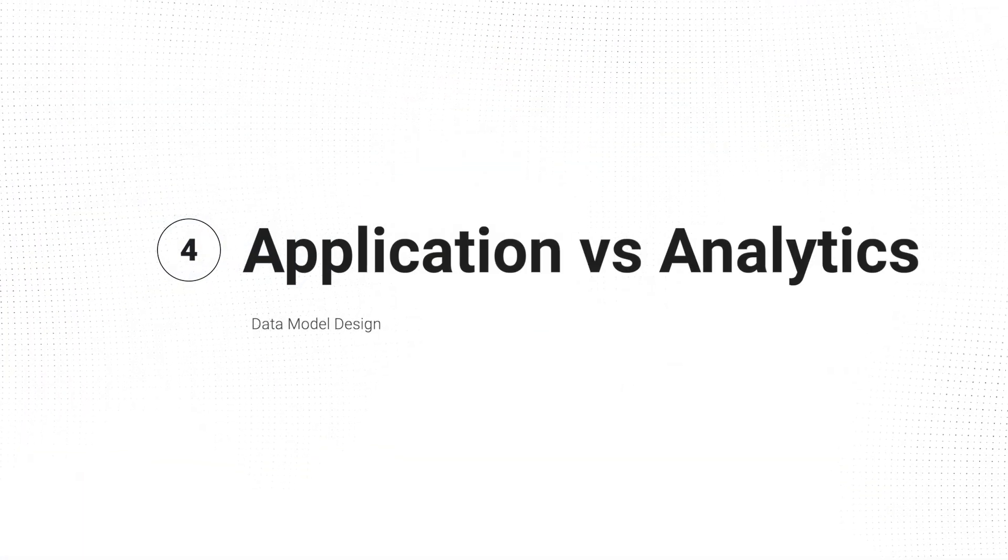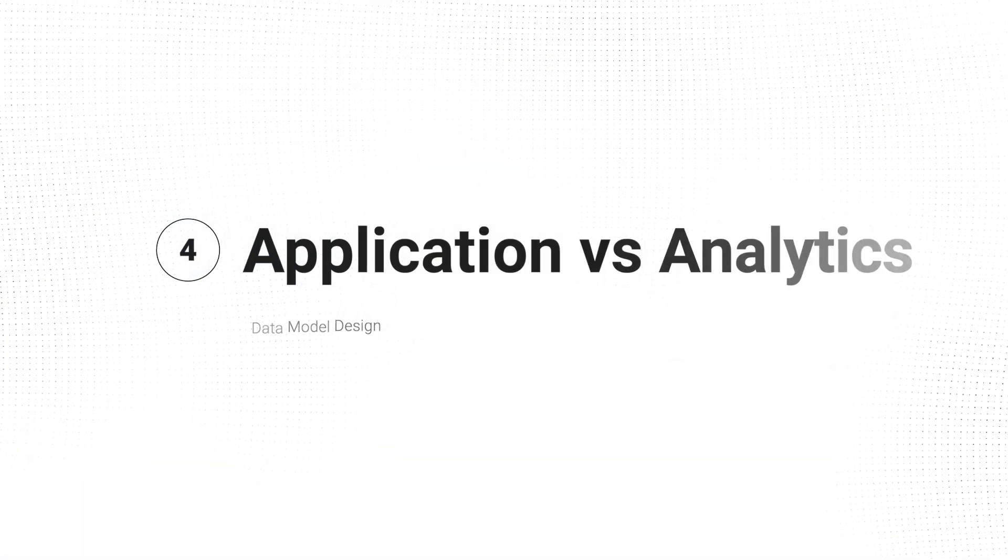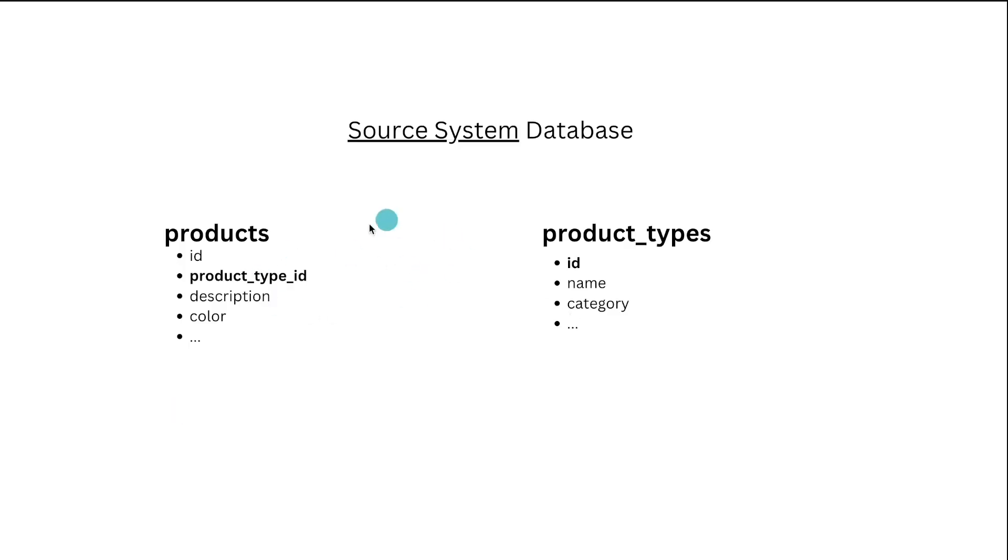The main point I want to drive home with this whole video is understanding the difference between how a database might be designed for an application — what's powering an application — compared to how to design something for analytics, because they are different. If you're making an application database, you'll have individual tables — in this case a product type table, a product table — and everything is really unique and isolated because you're joining on individual rows most of the time. That's generally how applications are developed.